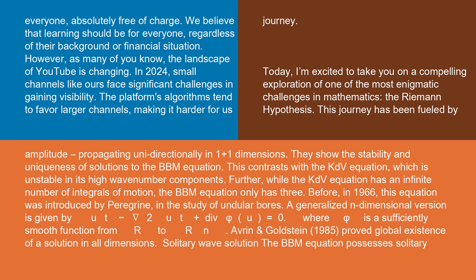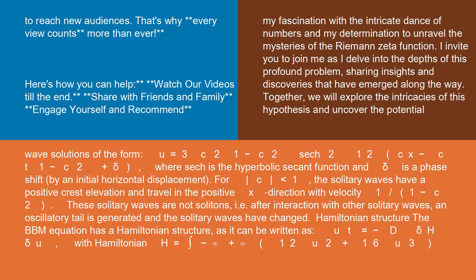Solitary wave solution: the BBM equation possesses solitary wave solutions of the form u = 3c²/(1-c²) sech²[1/2(cx - ct/(1-c²) + δ)], where sech is the hyperbolic secant function and δ is a phase shift by an initial horizontal displacement.